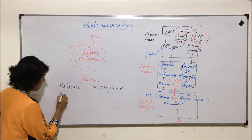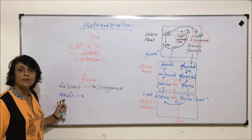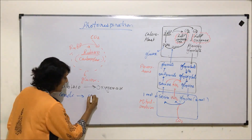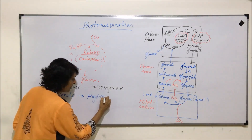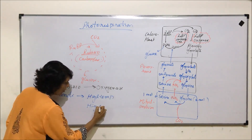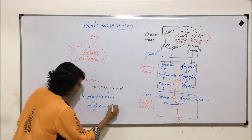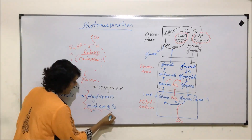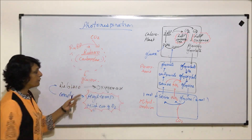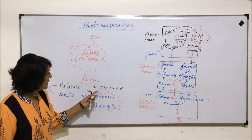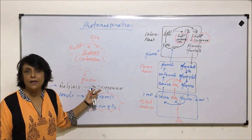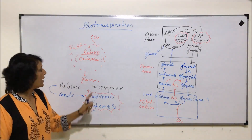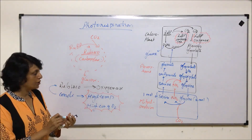The conditions in which this behavior is observed — that is Rubisco acting as oxygenase — are high temperature and high concentration of oxygen. If these two conditions are present, then instead of normal carboxylase-like activity, Rubisco's activity starts as oxygenase.